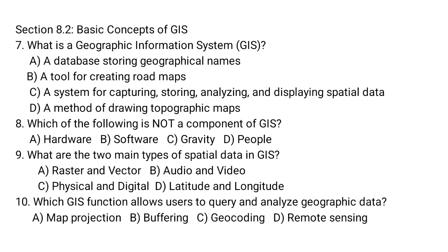Section 8.2: Basic concepts of GIS. Question number 7: What is a geographic information system? A. A database storing geographical names. B. A tool for creating road maps. C. A system for capturing, storing, analyzing, and displaying spatial data. D. A method of drawing topographic maps. Question number 8: Which of the following is not a component of GIS? A. Hardware. B. Software. C. Gravity. D. People. Question number 9: What are the two main types of spatial data in GIS? A. Raster and vector. B. Audio and video. C. Physical and digital. D. Latitude and longitude.